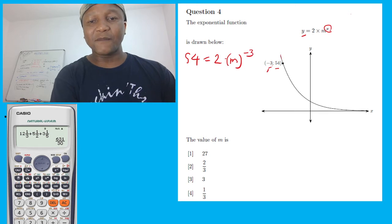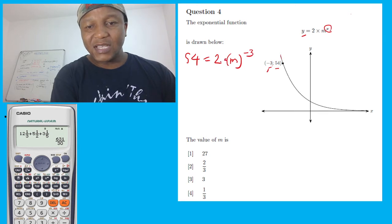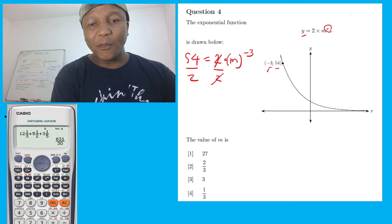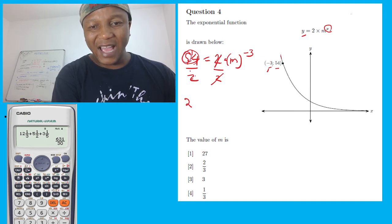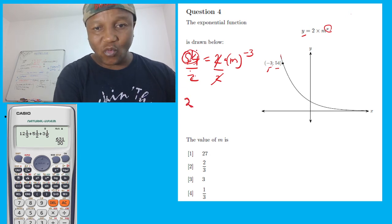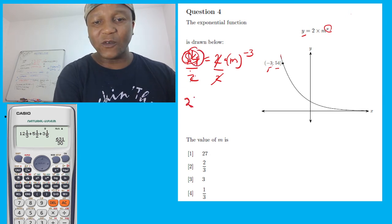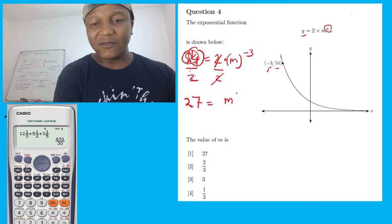Here we have multiplication, so I can simply divide by 2 on both sides — divide by 2 and these cancel. How many 2s in 54? That's 27. So we're left with 27 equal to M to the power of negative 3.